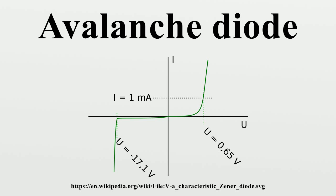Protection: Zener diodes are used to protect electronic circuits against damaging high voltages. The avalanche diode is connected to the circuit so that it is reverse biased — in other words, its cathode is positive with respect to its anode. In this configuration, the diode is non-conducting and does not interfere with the circuit. If the voltage increases beyond the design limit, the diode goes into avalanche breakdown, causing the harmful voltage to be conducted to ground. When used in this fashion, they are often referred to as clamping diodes or transient voltage suppressors because they fix or clamp the maximum voltage to a predetermined level.